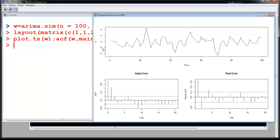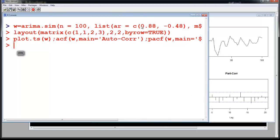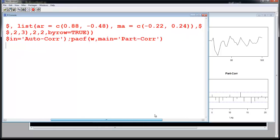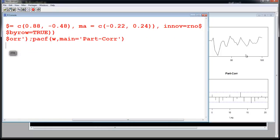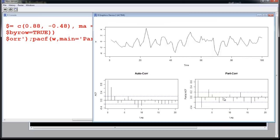This is the plot showing the simulated ARMA time series with autoregression coefficients 0.88 and -0.48, and moving average coefficients -0.22 and 0.24. The partial autocorrelation function shows two significant lags. The autocorrelation function also shows two points, though the second point is not that significant.